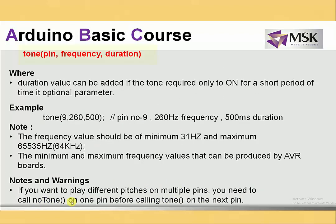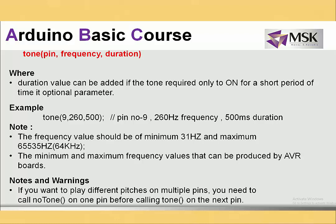The second variation of the tone function adds a duration argument: tone(pin, frequency, duration). For example, tone(9, 260, 500) means pin 9, frequency 260 Hz, duration 500 milliseconds. Less duration gives a shorter beep; more duration gives a longer tone. The maximum frequency for tone generation is 64 kHz (65,535 Hz) and the minimum is 31 Hz, as provided by the AVR hardware.